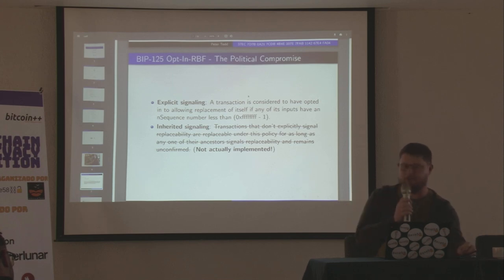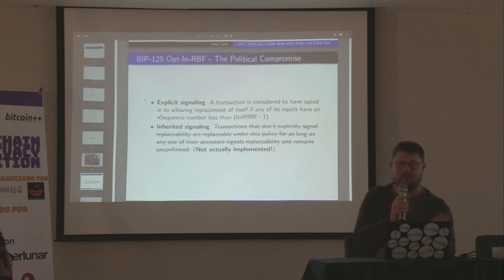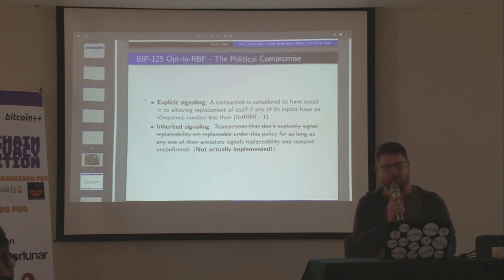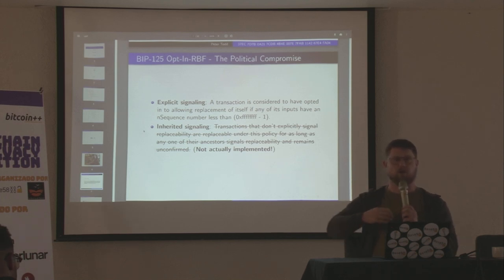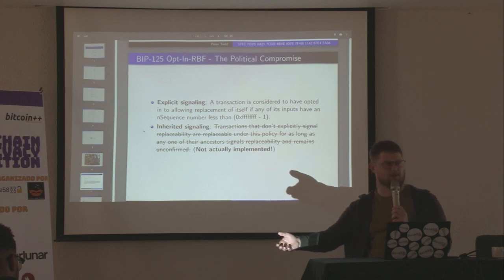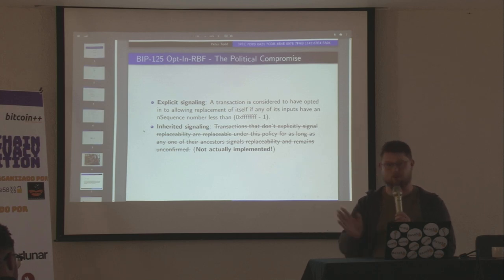So what was the political compromise — how did we get transaction replacement in? It's BIP 125, which I'm a co-author of. The key thing that allowed transaction replacement to get in was explicit signaling: transactions are considered to have opted in to allow replacement if the nSequence number is less than some value. This is in the spirit of Satoshi's original idea — we're still using nSequence, but now we're letting people opt in.